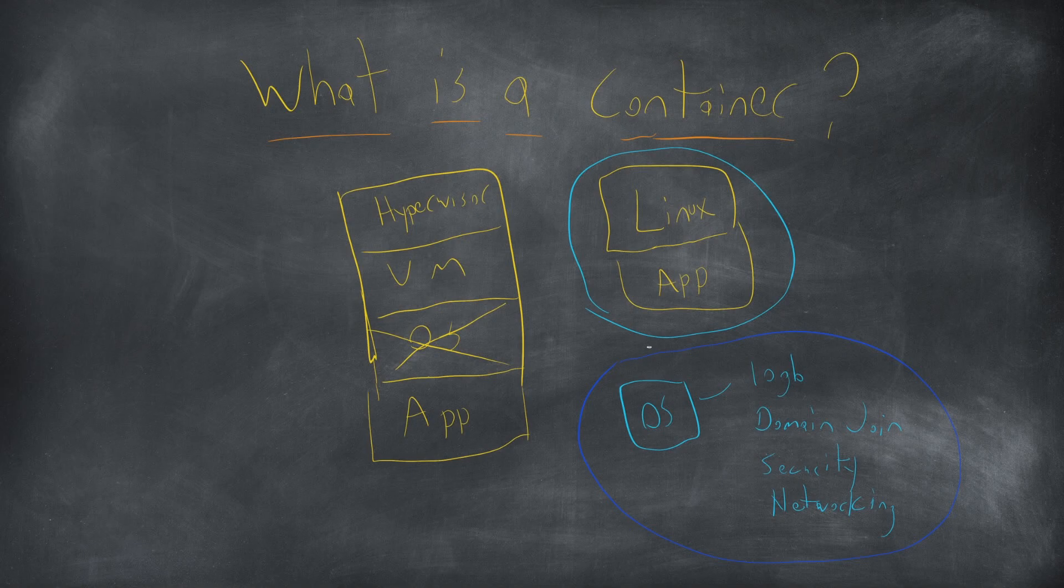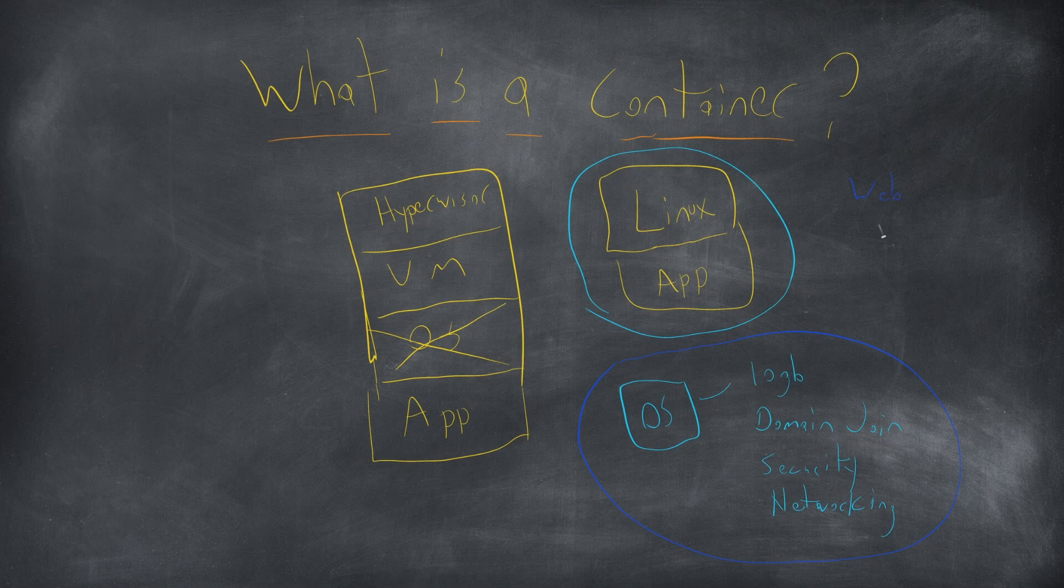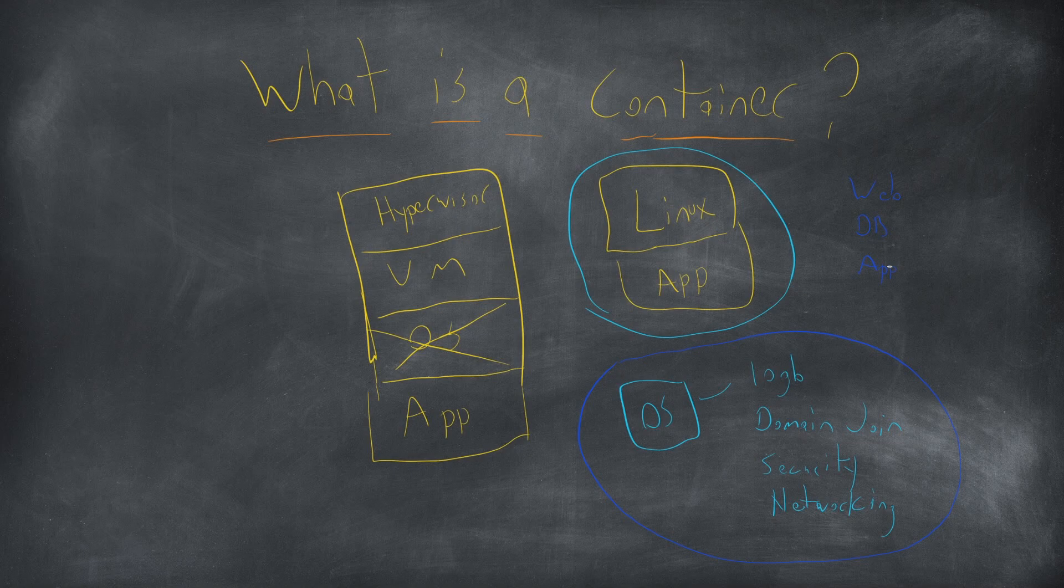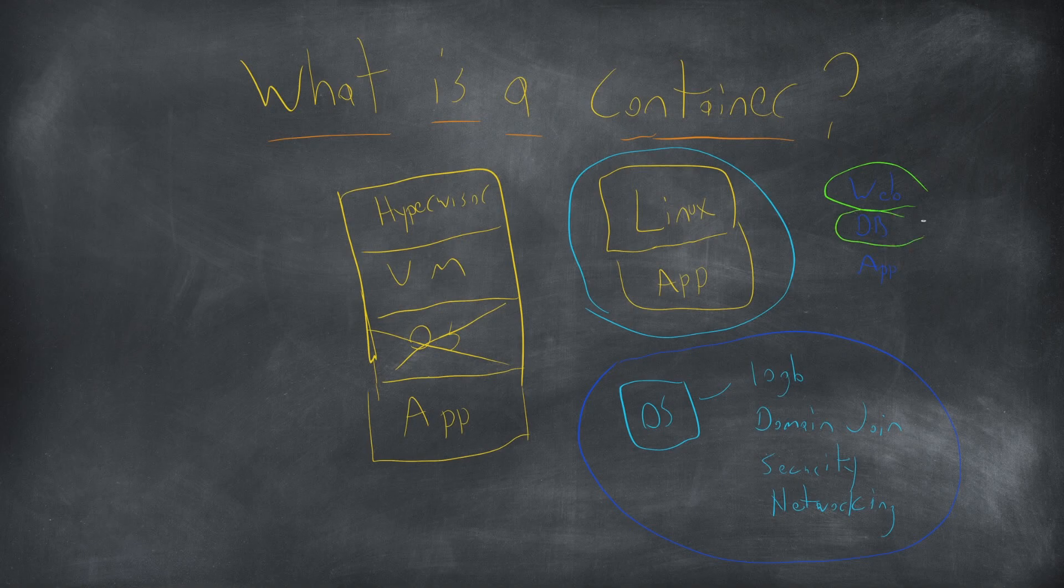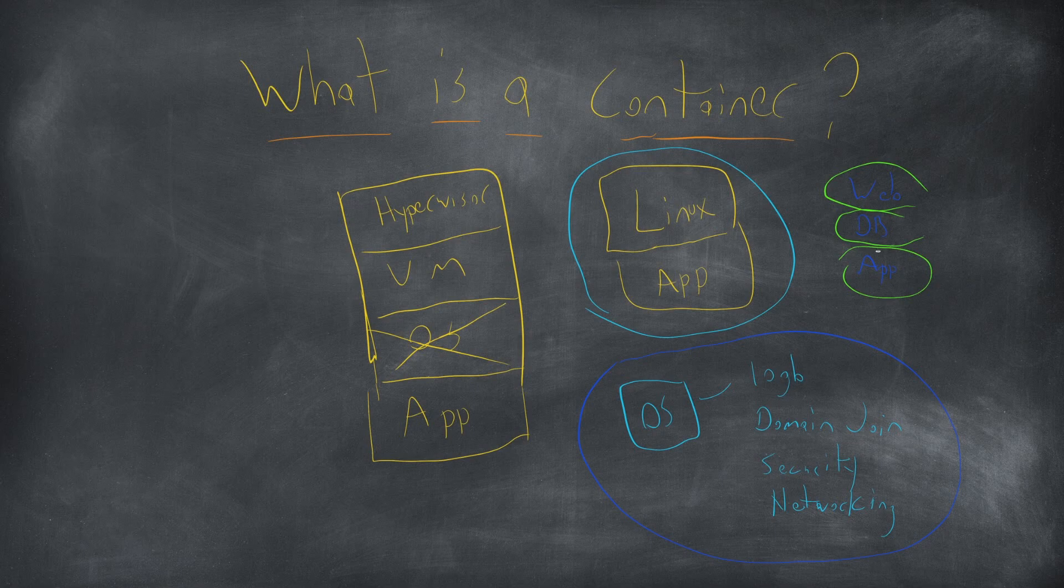So for example if we're doing a three-tier application well we have a web VM, we have a database VM, and we have an app VM which runs the actual application. But with the container each one of these is its own little container and all we need to do is deploy the individual application specifics for the solution and we don't need to worry about deploying something like Ubuntu every single time we run it.